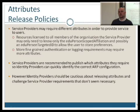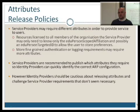Service providers are recommended to publish which attributes they require so that identity providers can quickly identify the correct attribute release policy configuration. This is most important and these are usually listed on the UK Federation website. We recommend that if librarians are having difficulty matching these two, they refer to the UK Federation website to look at what attributes are actually required by the service provider.